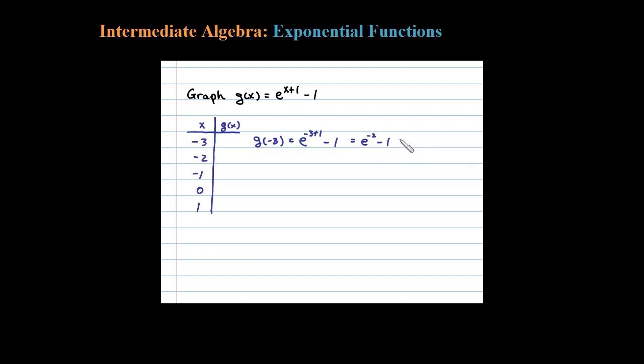On a calculator, that's approximately equal to -0.86. So there's one ordered pair. Now let's substitute in the rest of the values and see what we get.